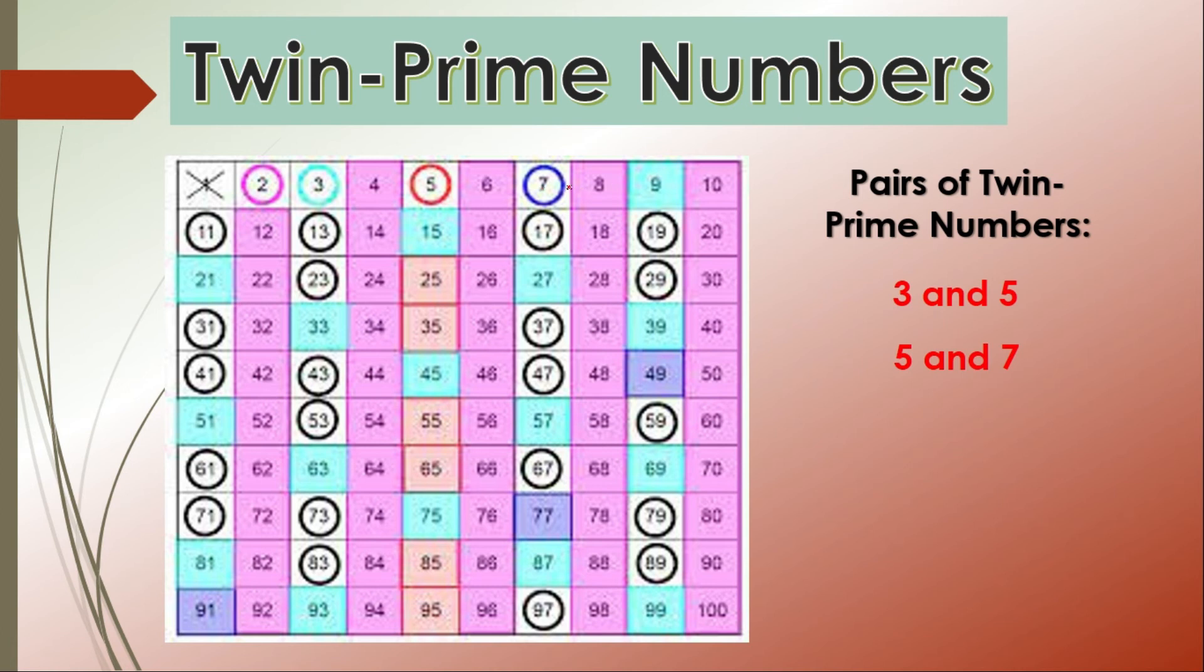So next pair will be 11 and 13. Here also only one composite number is between them. Then next pair will be 17 and 19, and so on. That means you need to check there should be only one composite number between two prime numbers, then those pairs will be set to twin prime numbers.